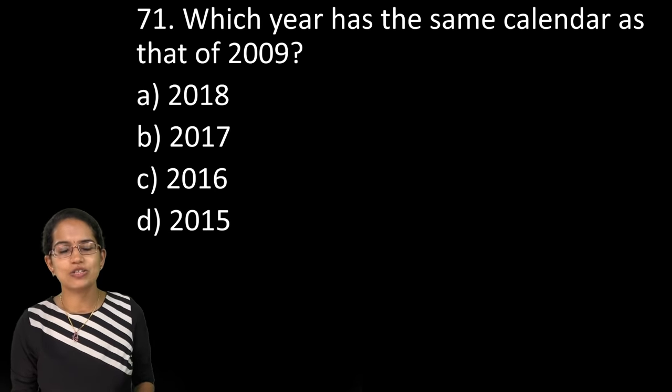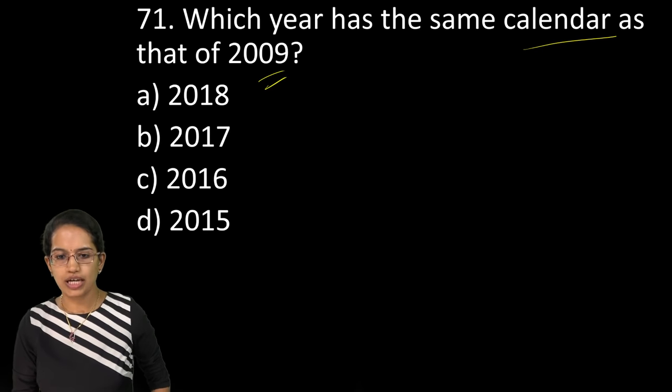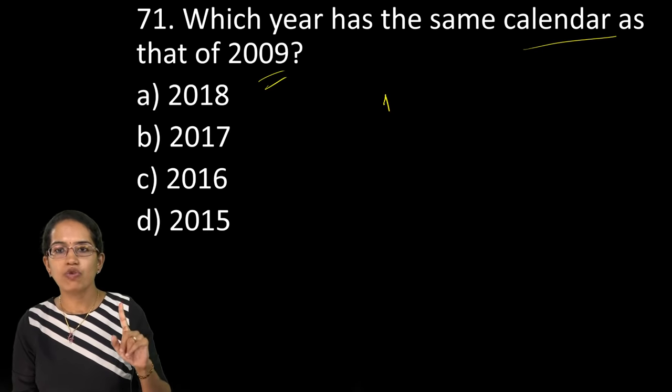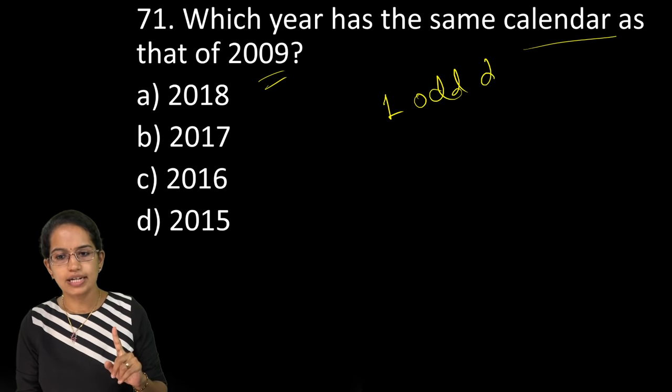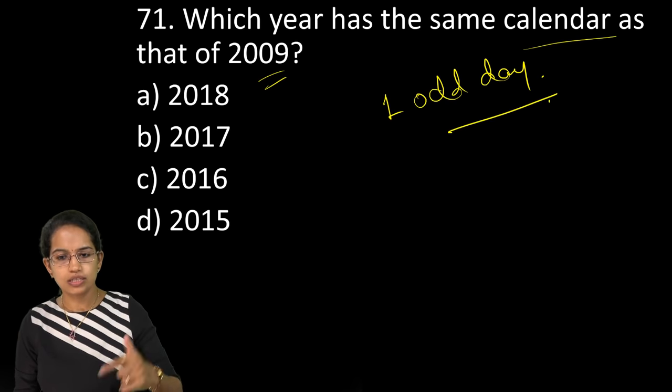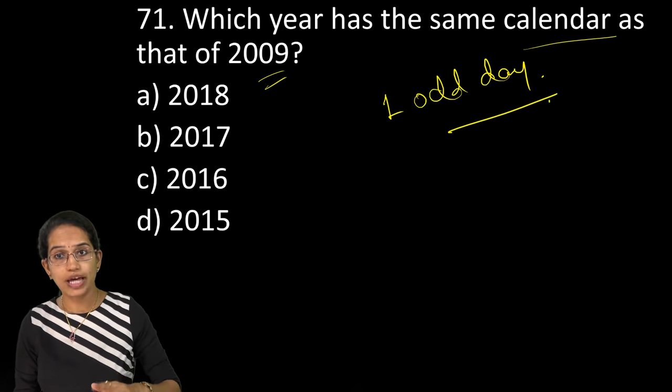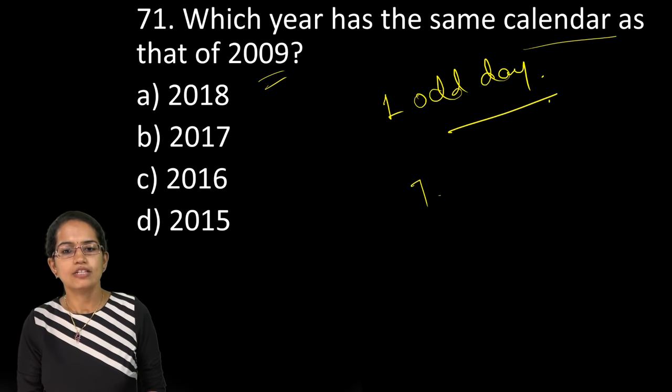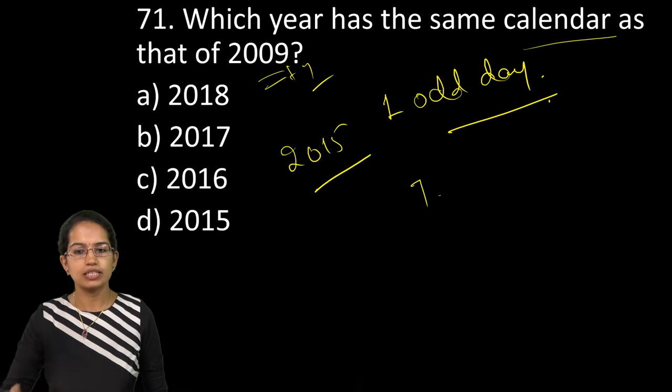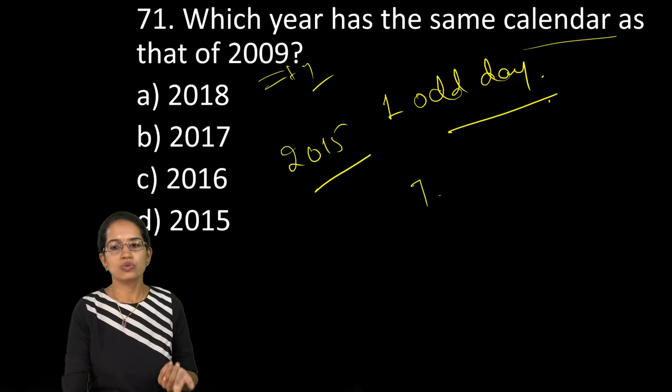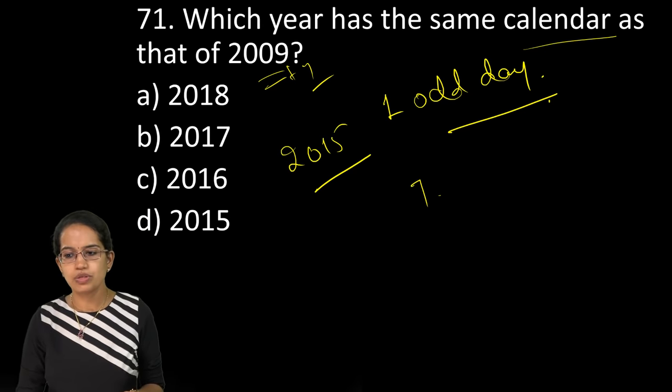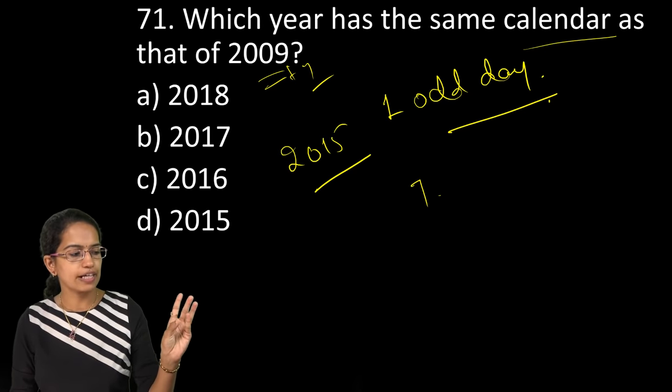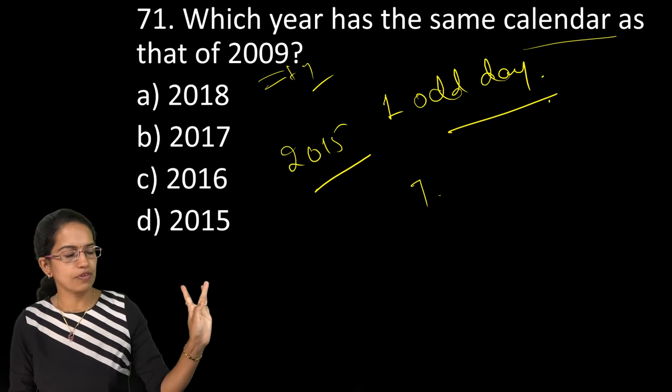Again, another question on calendar. Which year would have same year as 2009. So every year we have one odd day that is there. So across the 7 years, you would have 7 days and those 7 days would make the same calendar year. So I would add 7 to it. So you would have 2015 would be having the same calendar year as 2009. So after 2009, you would have 9, 10, 11, 12, 13, 14 and 15. So 7.